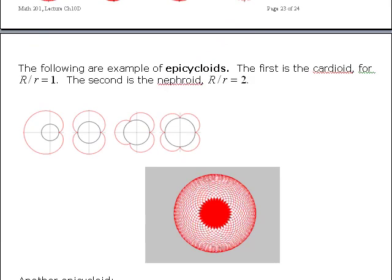And we see the same situation for the epicycloid. First curve is a cardioid. Here's your cardioid. Here's your nephroid. In this case, the ratio of big R to little r is one. In this case, it's two. And here, it's not an integer. And it takes many, many cycles before the pattern is established.